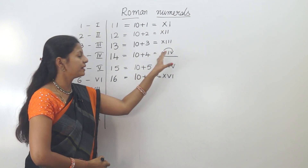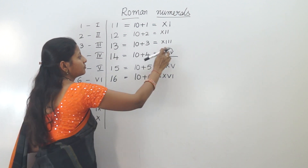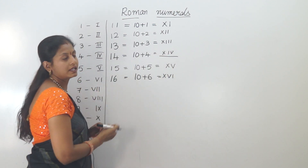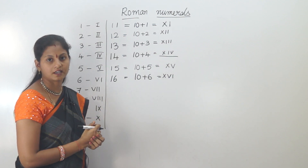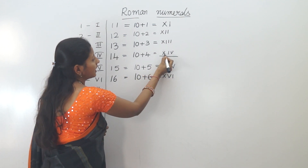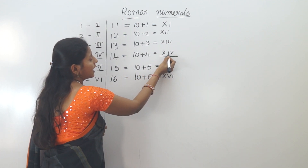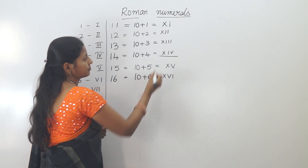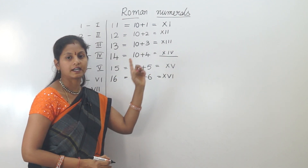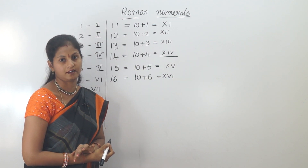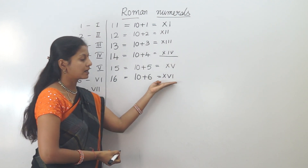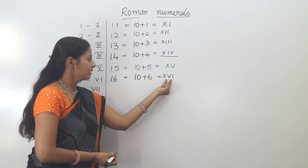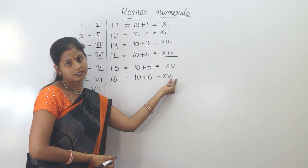Here, there is a smaller symbol in the middle. If a small symbol is in the middle, the right side will be added and the left side will be subtracted. So XV (15) plus I (1) equals 16.